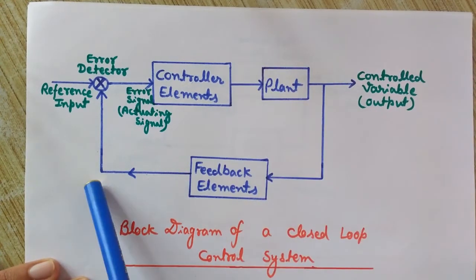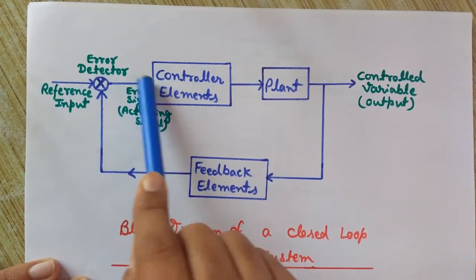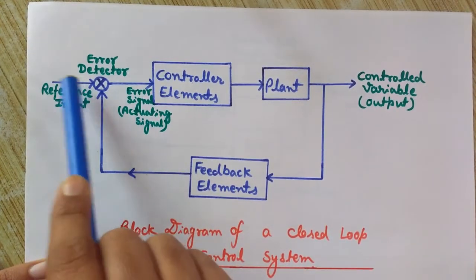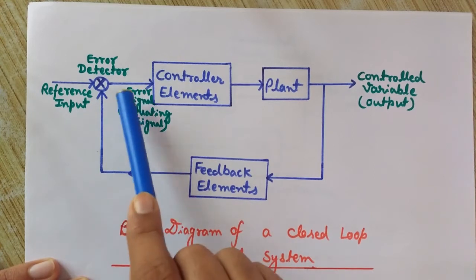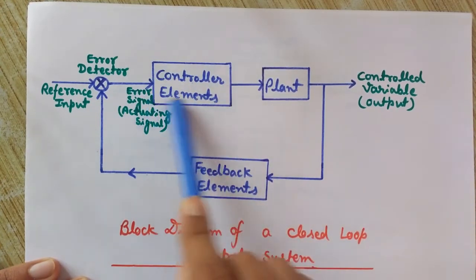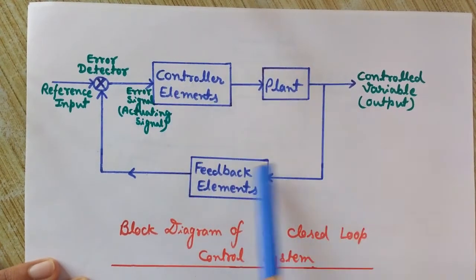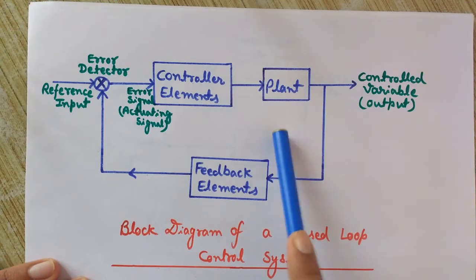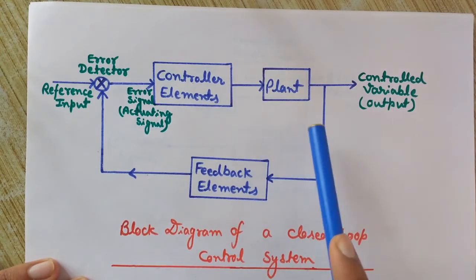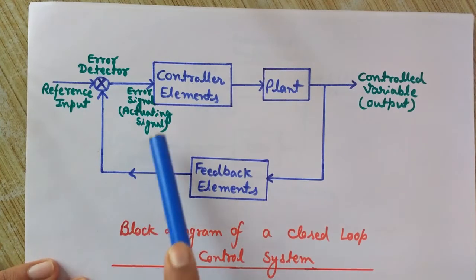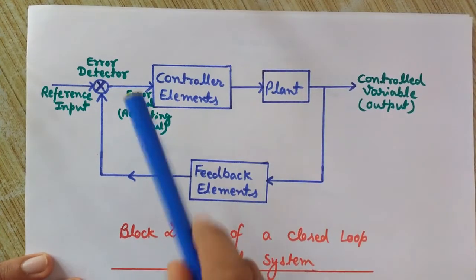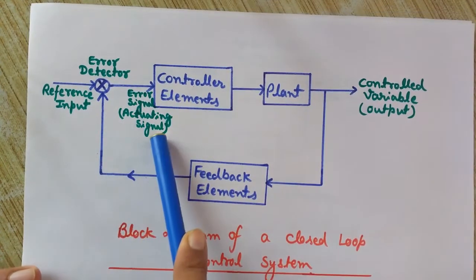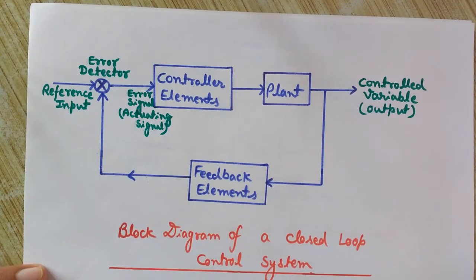This difference is used to control the plant — to control that system. The error detector produces a signal called the error signal, which is the difference between the reference input and the controlled output. This error signal is the input to the controller elements. In this way, we can change the output of the system as per our requirements. This error signal is also known as the actuating signal.